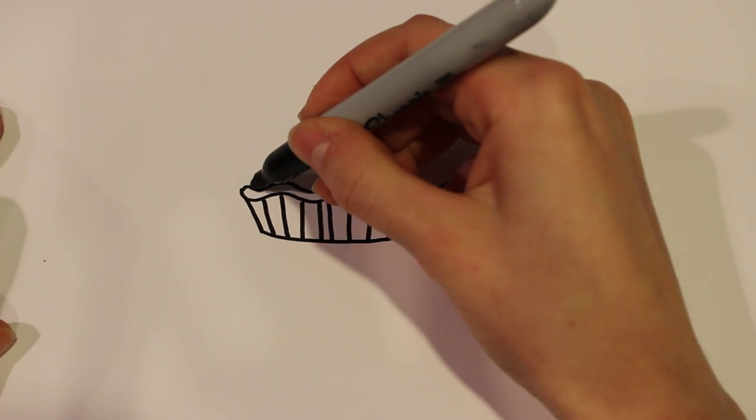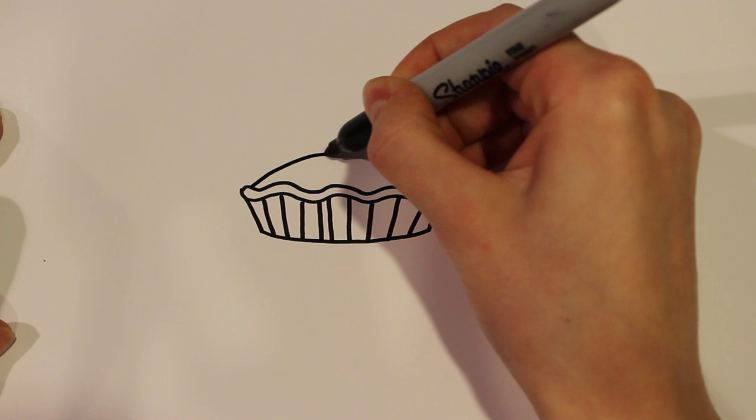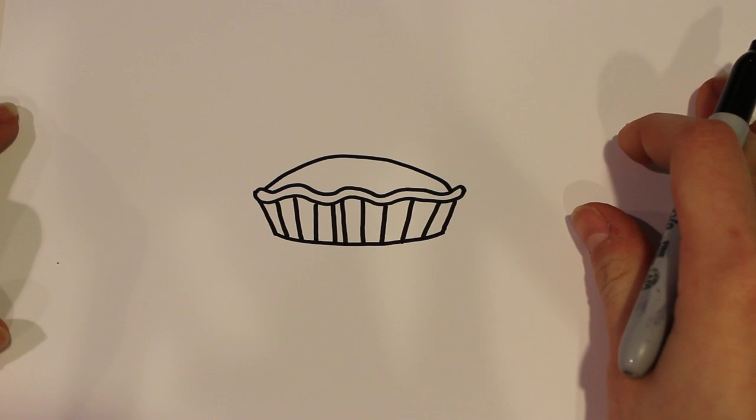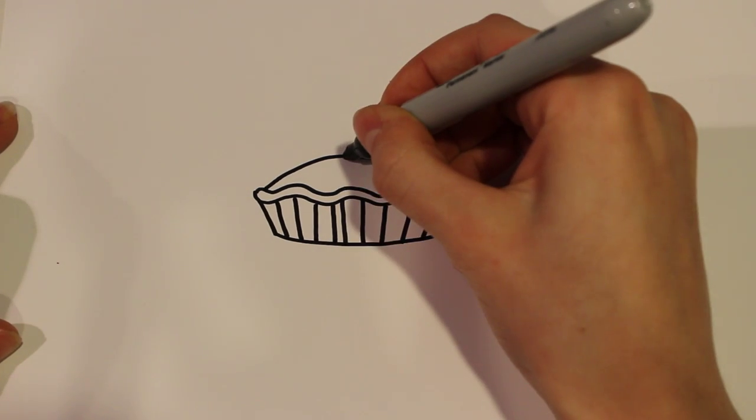And then for the top part all you need to do is add another curved line that connects both of those sides and then for another detail we can add...